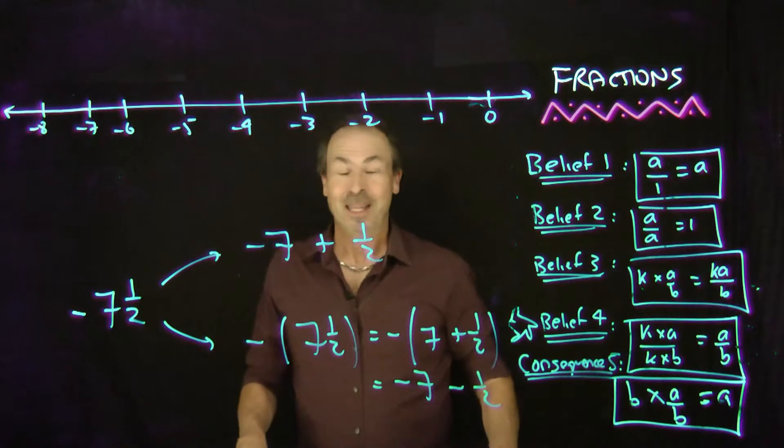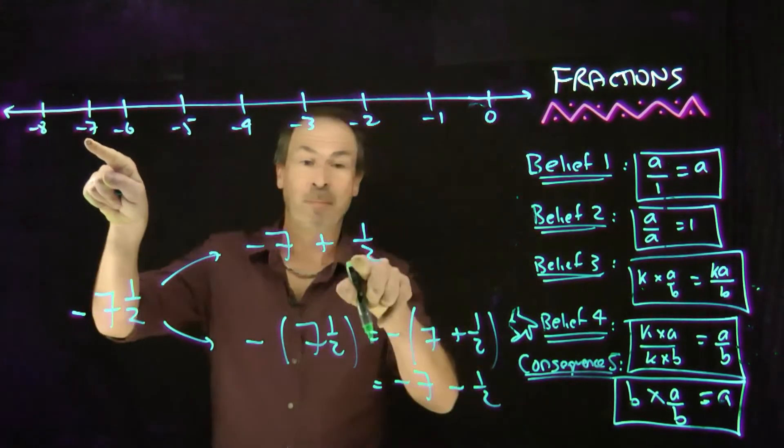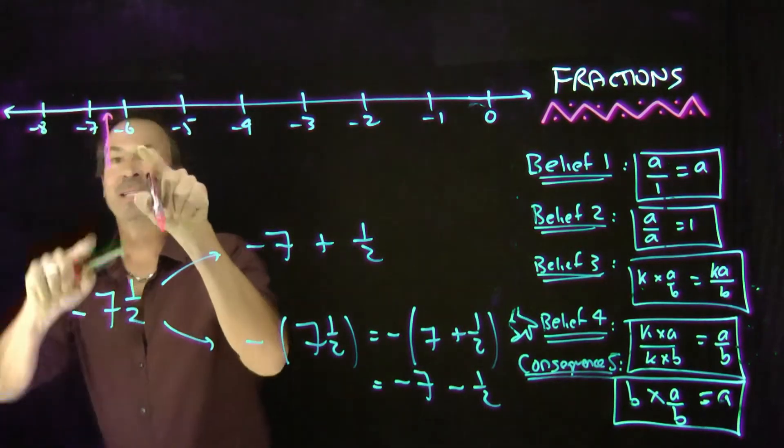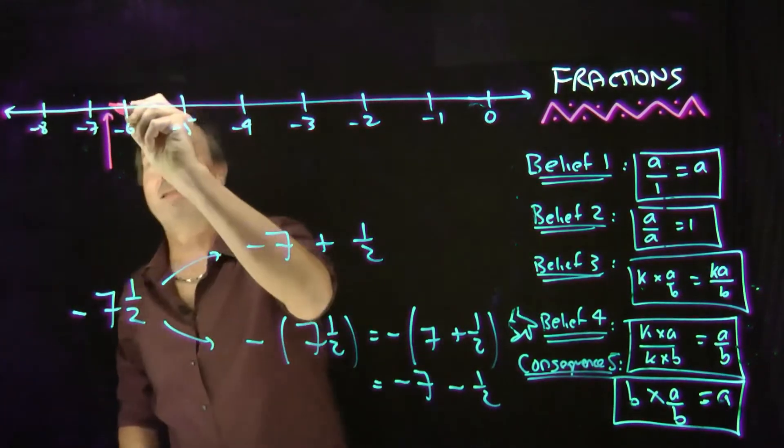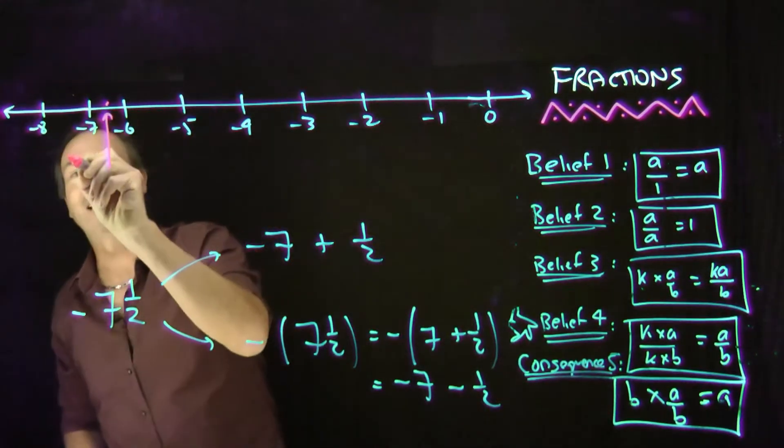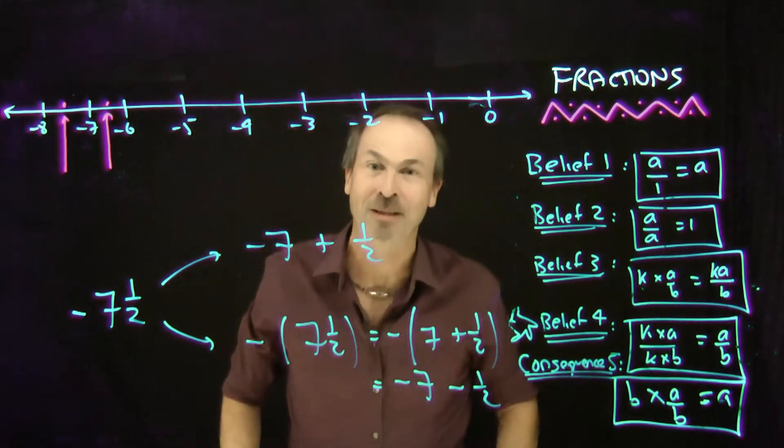Whoa! They are actually two different numbers. I mean this first interpretation gets me to negative 7 plus a half gets me to here. Negative 7 plus a half gets me to there on the number line. That point. Whereas this one is negative 7 take away a half brings me down from negative 7 to there. To that point. So they really are different numbers.